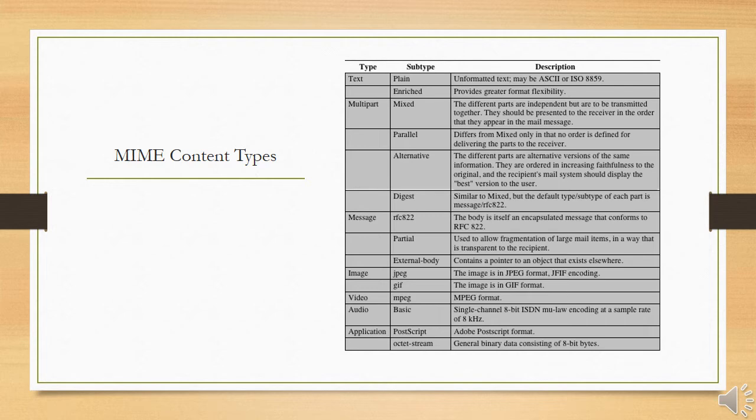The only necessary field in the outer header is the content type field, which identifies this as a message external body subtype. The inner header is the message header for the encapsulated message. The content type field in the outer header must include an access type parameter, which indicates the method of access, such as FTP, the file transfer protocol.